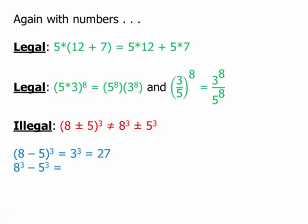Whereas if we looked at something different — 8 cubed minus 5 cubed — 8 cubed is 512, 5 cubed is 125. If we subtract them, we get 387. And those two are not equal. We get two different numerical answers, and that's why we can't set those things equal.